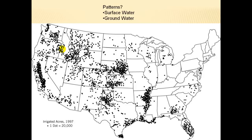Looking at irrigation patterns and whether it's surface water or groundwater gives us an idea of what we're working with. In this swath of the country, there are really no large rivers for surface irrigation, so it's predominantly groundwater irrigation — this is where the Ogallala Aquifer is located. In Florida, there aren't many rivers either, so it's predominantly center pivot groundwater irrigation. Over here, some water comes from the Rio Grande, but there's also quite a bit of groundwater, along with some diversions from nearby rivers.